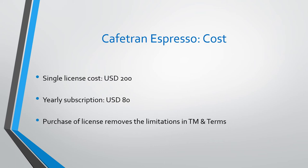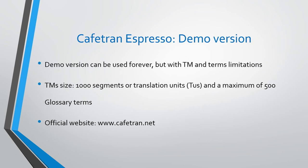Once you purchase the license, the limitations in TM and terms will be removed. Cafetran Espresso has a demo version, and those demo limitations are removed once you buy the license. The demo version can be used forever, but it's useful only for occasional translators — the translation memory can only hold 1,000 segments.